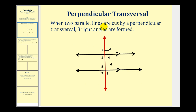When two parallel lines, as we see here in black, are cut by a perpendicular transversal, as we see here in red, eight right angles are formed. Remember, we can mark right angles using this little box as we see here. So angles one through eight are right angles and therefore they all measure 90 degrees.